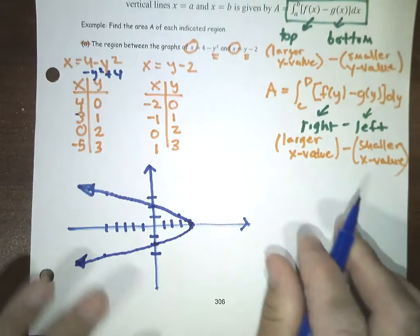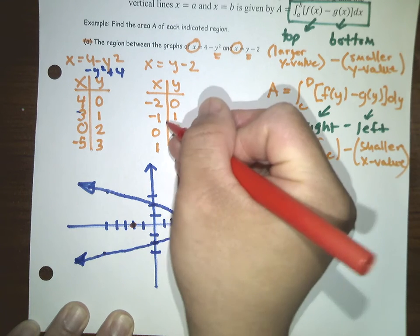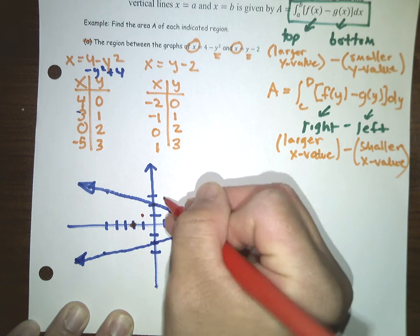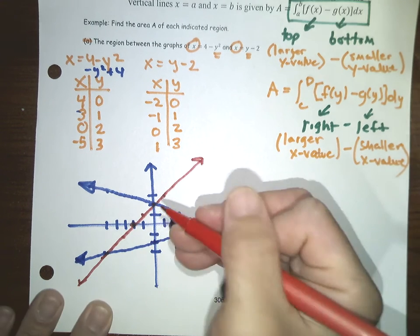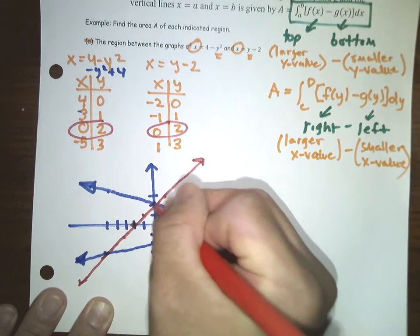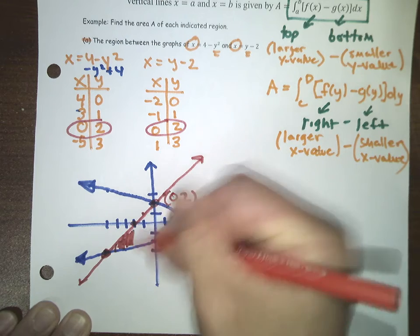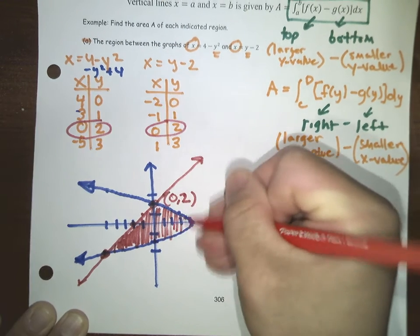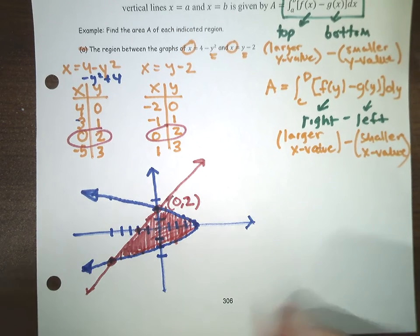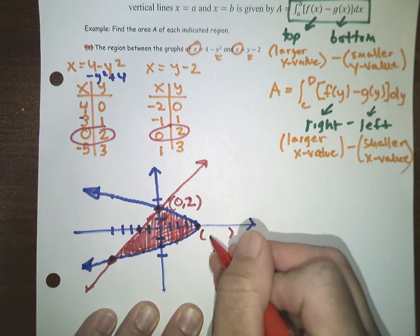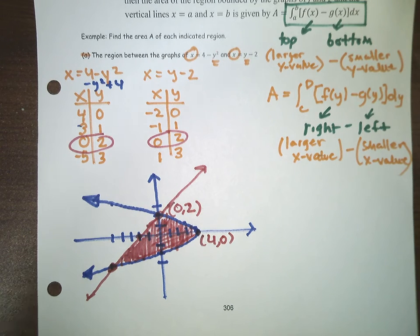For the other curve, x = y minus 2: there's a point at (-2, 0), then at (-1, 1), then at (0, 2), and then at (1, 3). Looking carefully, one of the points where they intersect is clearly at (0, 2). I probably need to find what that other intersection point is, because I need to find the area that is enclosed by these two regions. That point on the parabola is at (4, 0).